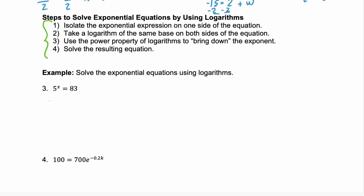Let's start with example 3: 5 to the power of x equals 83. The first step is to isolate the exponential expression on one side — that's already done for us. The second step is to take the log with the same base on both sides of the equation. So we're going to take the log of 5^x on the left and the log of 83 on the right. Remember, as long as we're doing the same thing to both sides we keep that equal. Now we can use the power property of logs, which tells us this exponent x gets multiplied by the log of 5.